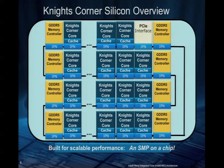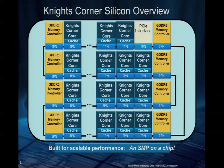I don't think we've shown this slide publicly before. This is a single-chip silicon overview. These are the key interfaces — this isn't a pure layout view. We've got multiple cores, we have the IPN — interprocessor network — that's how they talk to each other and communicate across. Then we have memory controllers that go out to memory, and a PCIe interface — it's a PCIe target device.